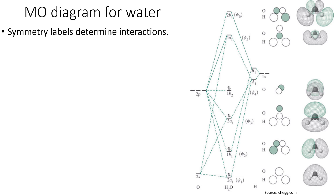Now we go on to the MO diagram for water — a quite busy-looking diagram. Crucial here are all the symmetry labels. On the left hand side you can see the oxygen atomic orbitals: 2s at the bottom and 2p further up. On the right hand side are the hydrogen atoms — the two 1s orbitals on hydrogen — and how they divide into the symmetry adapted linear combinations, A1 and B1. It turns out that there are actually three orbitals in this picture which transform as A1: one of the representations for the two hydrogen atoms is A1, the 2s on oxygen is A1, and the 2pz on oxygen is A1.